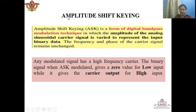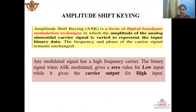First we will consider binary schemes, which are categorized into three methods: Amplitude Shift Keying, Phase Shift Keying, and Frequency Shift Keying. Amplitude Shift Keying is a form of modulation technique in which the amplitude of the analog sinusoidal carrier signal is varied to represent the input binary data, whereas the frequency and phase of the carrier signal do not change.